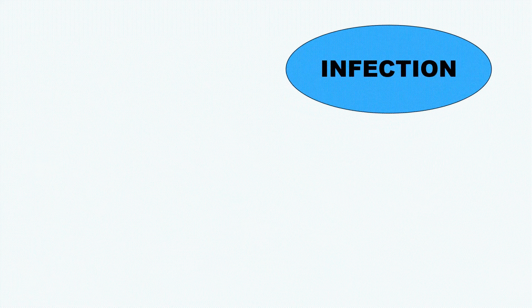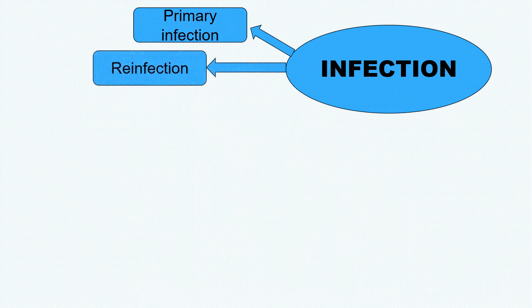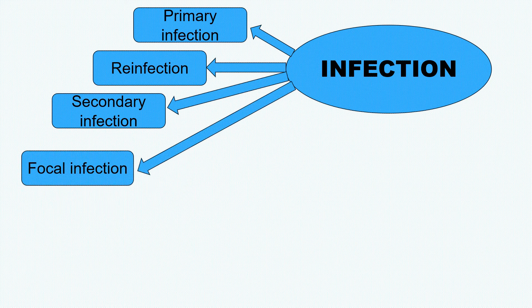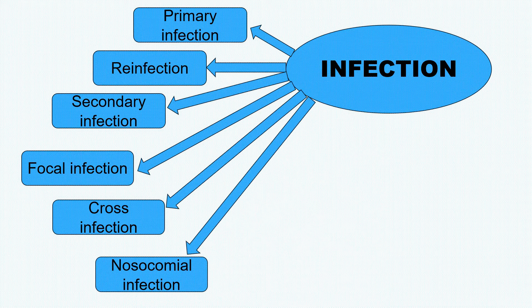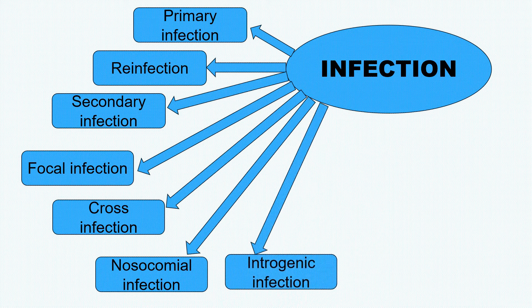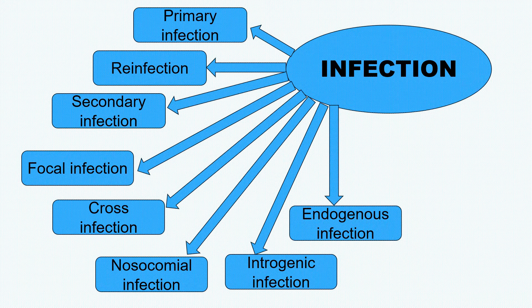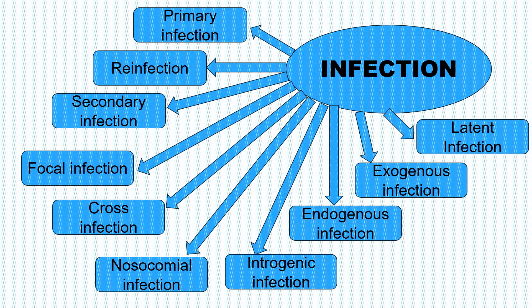There are ten types of infections. Let us see them one by one. First is primary infection, second is reinfection, third is secondary infection, fourth is focal infection, fifth is cross infection, sixth is nosocomial infection, seventh is iatrogenic infection, eighth is endogenous infection, ninth is exogenous infection, and tenth is latent infection.